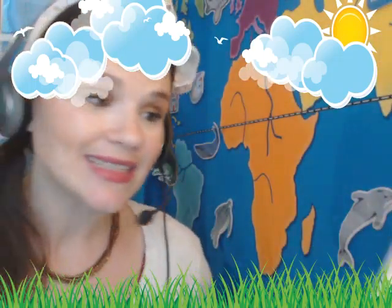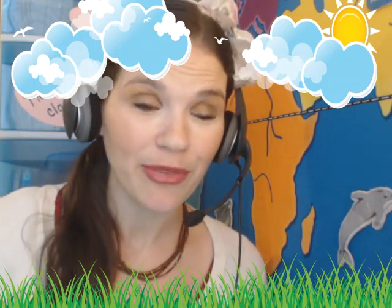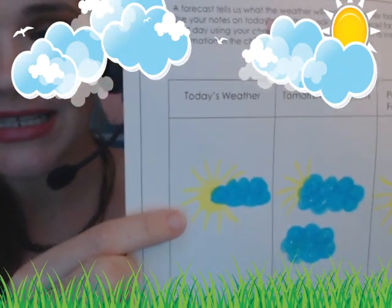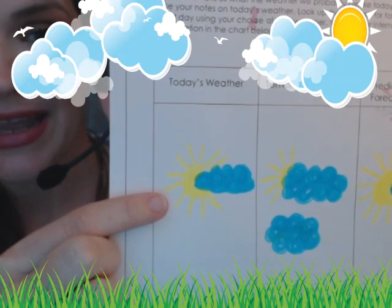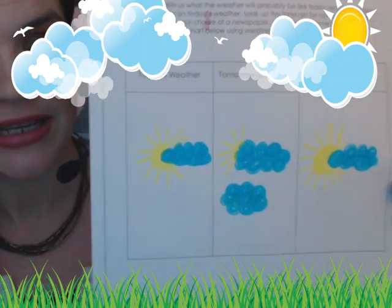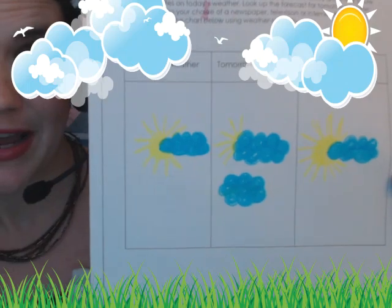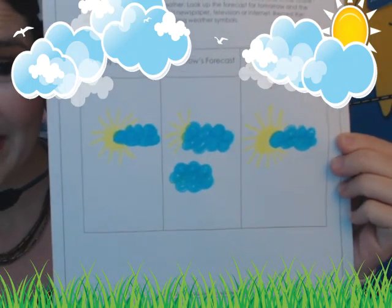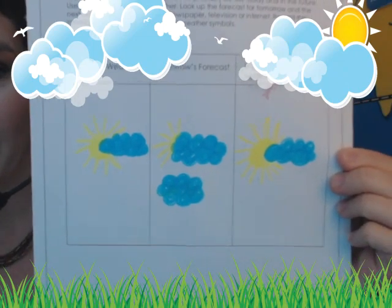So, my weather forecast. A forecast tells us what the weather will probably be like today and in the future. Use your notes on today's weather and look up the forecast for tomorrow and the next day using a newspaper, television, or the internet. Record the information in the chart using weather symbols. I found out today it's going to be partly sunny, so I drew a cloud and the sun. Tomorrow will be mostly cloudy, so I drew two clouds with less sunshine. The following day it's partly cloudy again, just like today.